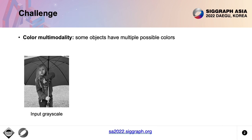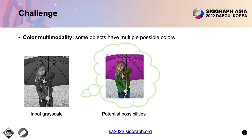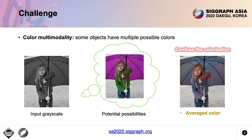However, there are still many objects that are potentially multi-colored, such as the coat a girl was wearing. It could be red, blue, violet, or other possible colors. Such color multimodality tends to confuse the model and cause averaged color or spatial inconsistency.